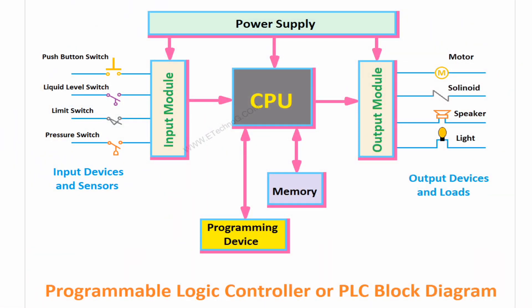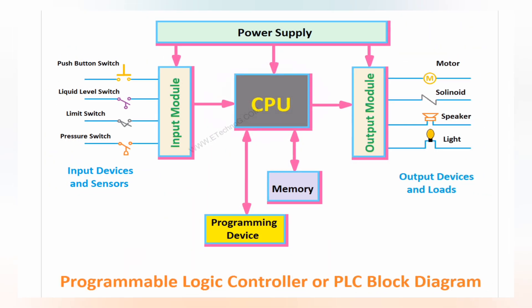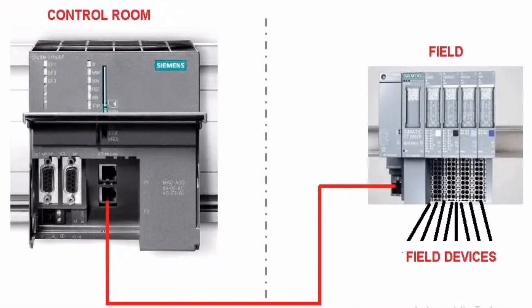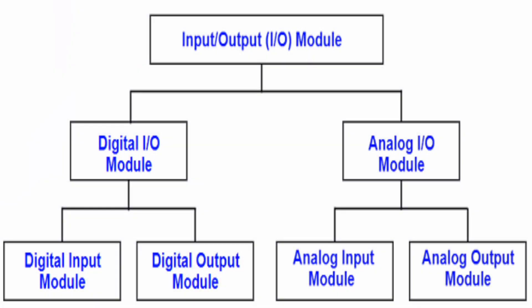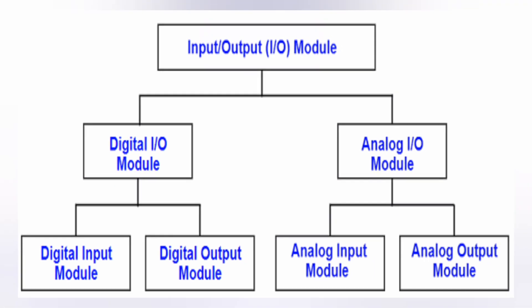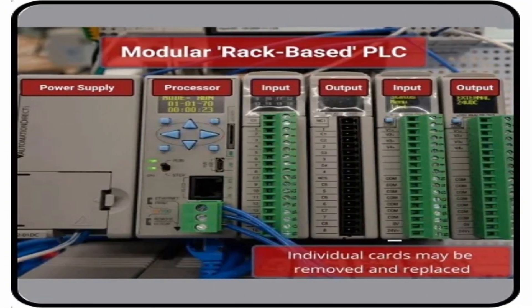The block diagram of PLC. A PLC has three basic sections namely: Input-Output section, Processor section, and Program Loader section.